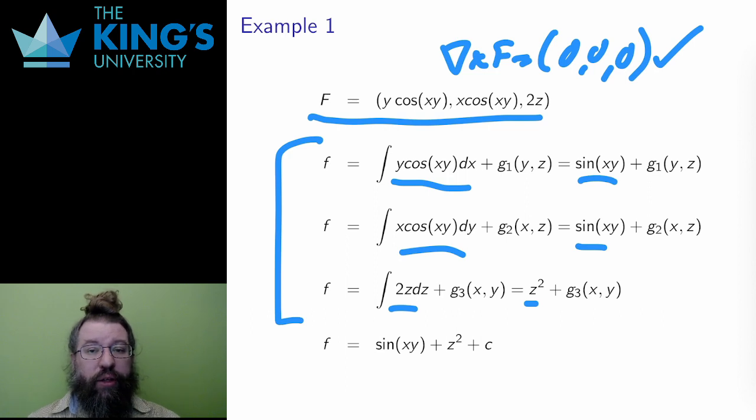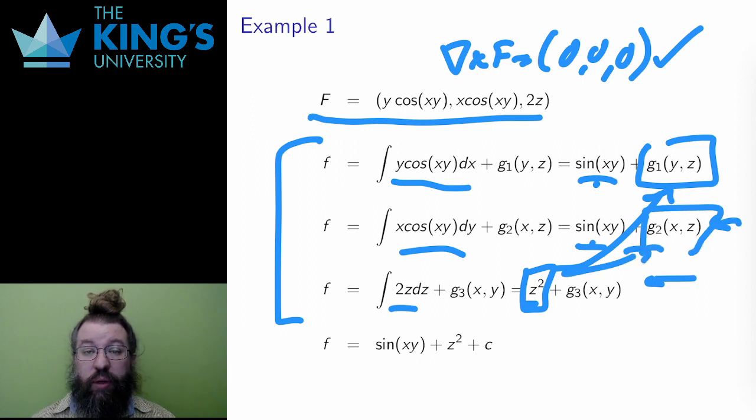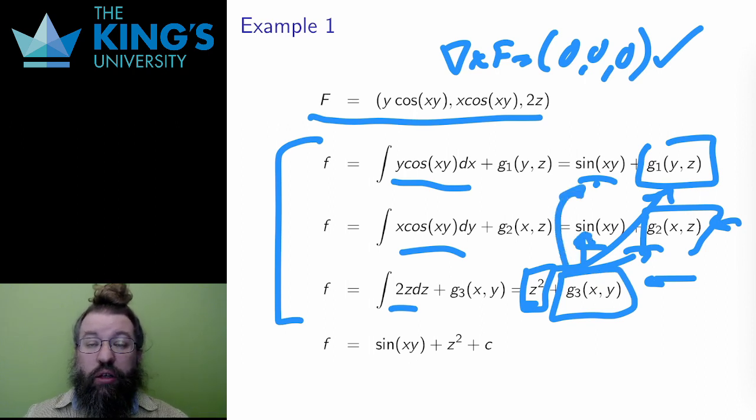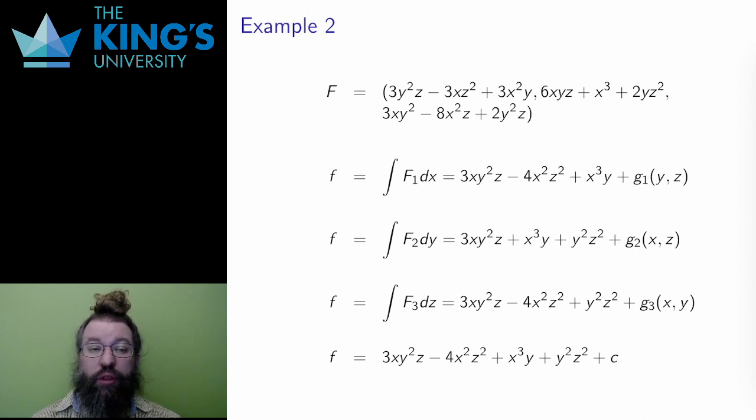Well, for g1, I look at the other two equations. The second equation has the same sin xy term, so nothing new here. The third equation has a z squared, so maybe g1 is just z squared. I can use the same logic for g2. Maybe g2 is also just z squared. And then for g3, I look at the two previous equations. The functions of x and y that show up here are sin xy. So maybe g3 is sin xy. In this way, I can conclude that the scalar field f, the potential, is sin xy plus z squared plus c. This matches all three patterns. By setting g1 and g2 to be z squared and g3 to be sin xy, and then adding the constant of integration, the actual constant plus c. So feel free to check that the derivatives of this f are indeed the three components of uppercase F.